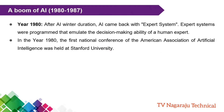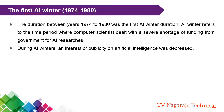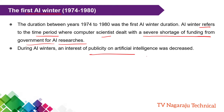Once artificial intelligence was at a very peak stage, suddenly the first AI winter occurred. AI winter refers to the time period where computer scientists dealing with artificial intelligence faced a severe shortage of funding. With no funding from the government, research was obviously reduced. In the period 1974 to 1980, research in artificial intelligence was reduced, and this period is called the first AI winter.